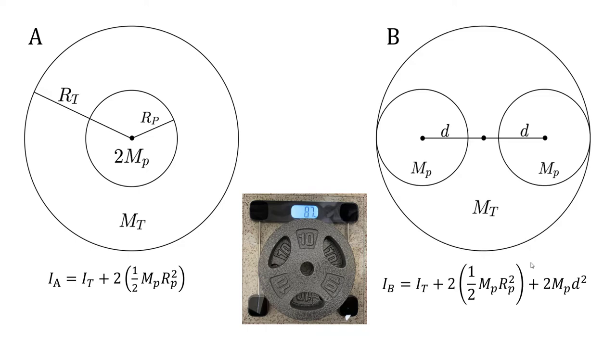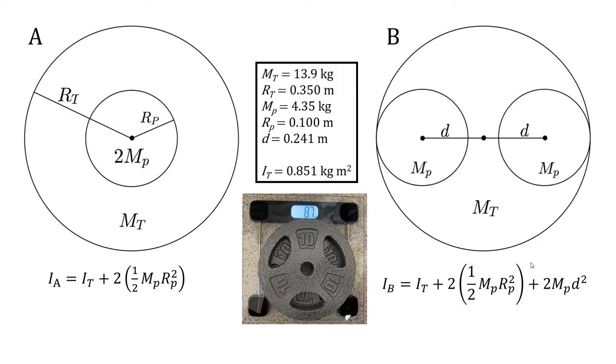For system B, we also have the moment of inertia for the turntable plus two times the moment of inertia of the plates around its axis of symmetry plus two md squared from the parallel axis theorem. Plugging in the numbers above, and we find that for system A, it has a moment of inertia of 0.895 kilogram meter squared, and for system B, it's 1.4 kilogram meter squared.